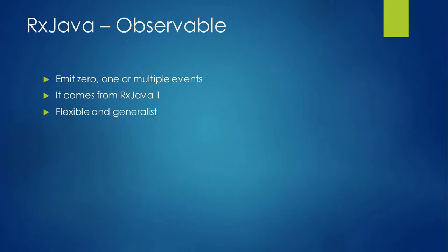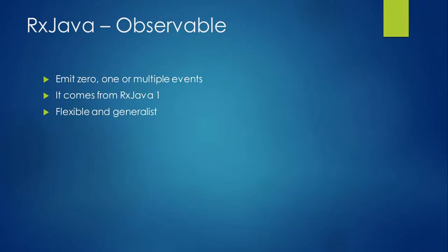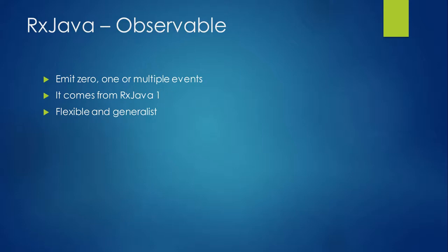Talking about the two basic types of emitters in RxJava: the first one is Observable. An observable is a type of emitter that can emit zero, one, or multiple events. Observable already existed in RxJava version one and is pretty flexible and generalist — you can use observable for everything. In the beginning of RxJava one, we had only observable. Later in RxJava one, they created Single, another kind of emitter we'll talk about next class. Observable is the most generalist emitter; you can use it for everything.